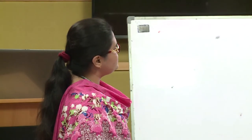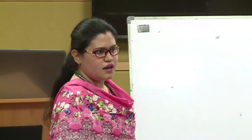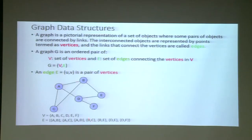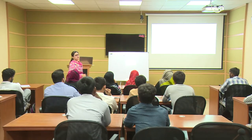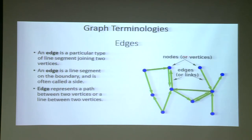Curly brackets represent unordered pairs because this is an undirected graph. Undirected graphs are represented by unordered pairs in curly brackets, and directed graphs, which have directions, are represented by ordered pairs. Ordered pairs use round brackets. Vertices are common connection points between edges, and edges are the links or connections between nodes.